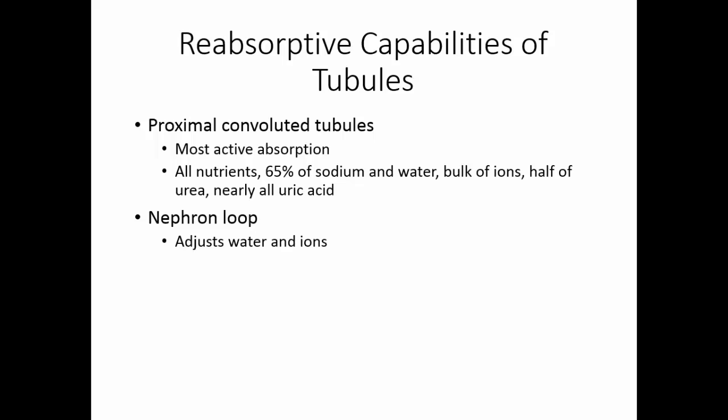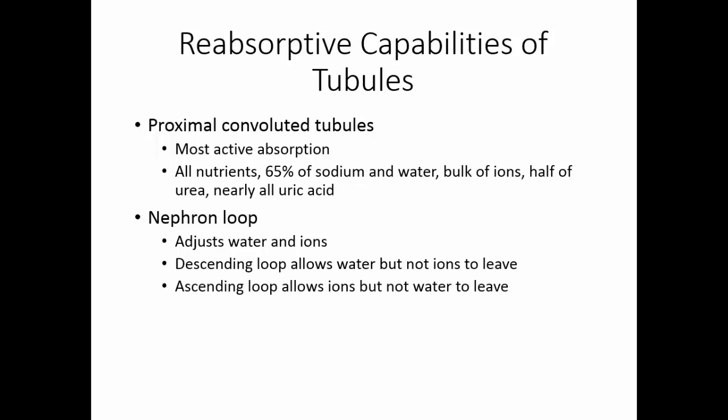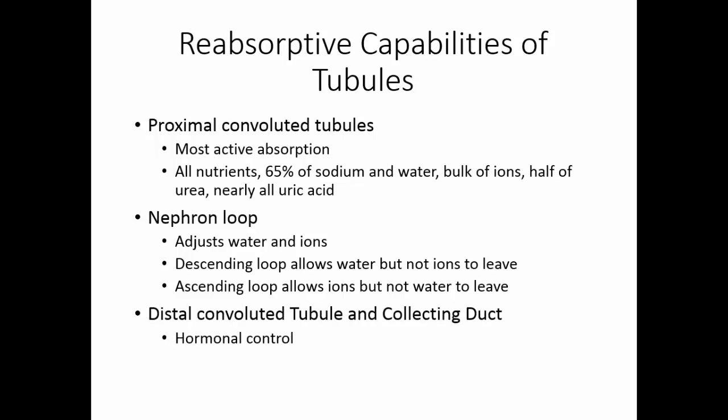In the nephron loop, we're adjusting water and ions. The descending loop will allow water but not ions to leave the filtrate, and the ascending loop will allow ions but not water to leave. This is more involved in concentrating or diluting the urine. In the distal convoluted tubule and the collecting duct, hormones play a role. Antidiuretic hormone will cause us to save water, aldosterone will cause us to save sodium, but atrial natriuretic peptide will cause us to lose sodium, and parathyroid hormone causes us to save calcium from the filtrate.